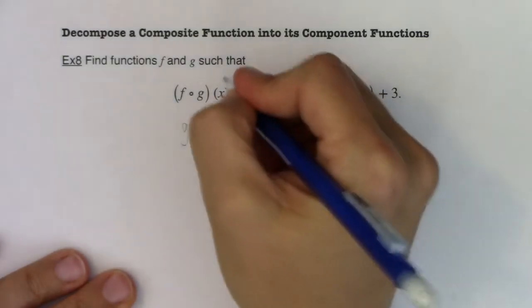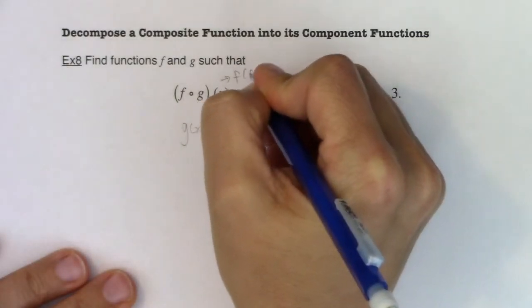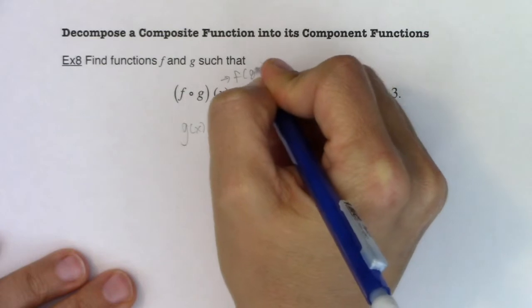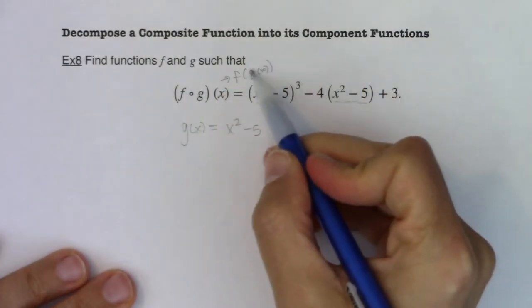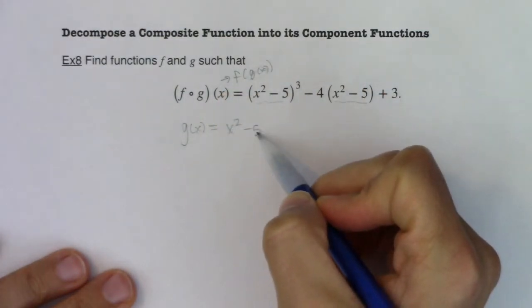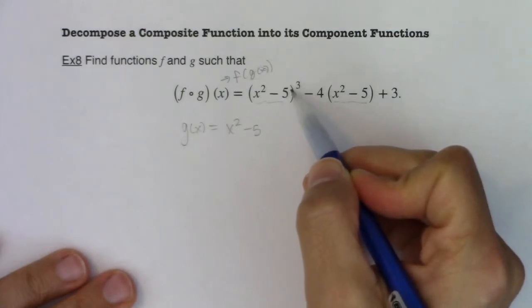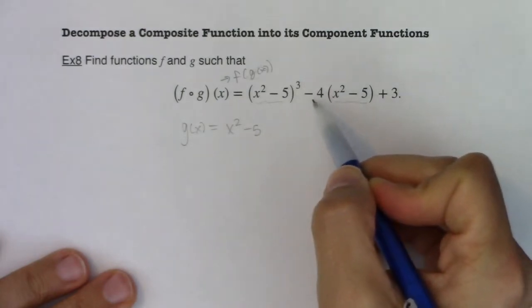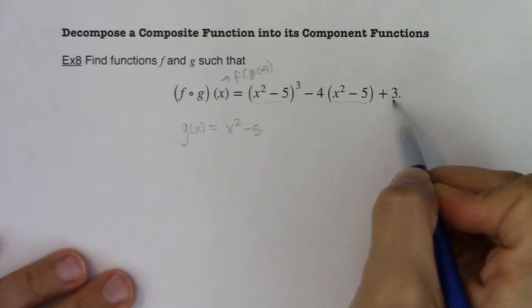Because keep in mind, this symbol is f of g of x. So I'm going to be doing something to g of x, doing something to x squared minus 5. And what did I do to it? Well, I cubed it, I subtracted four of it, and then I added three.